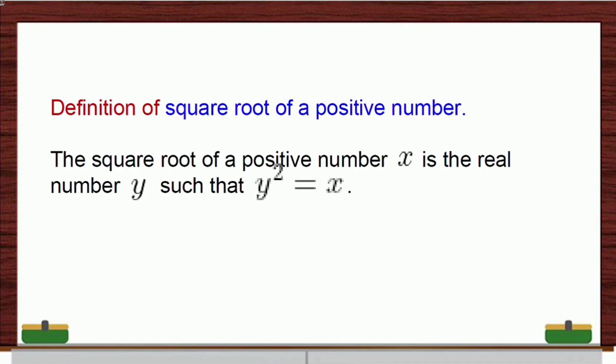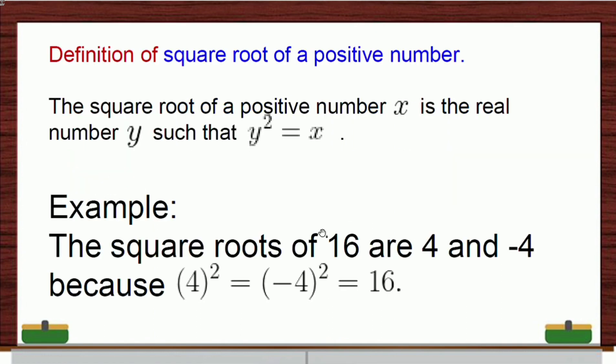The square root of a positive number x is the real number y such that y squared is equal to x. So, we're getting the square root of a positive number, and the answer must be a real number that, when you multiply it to itself, will give you that positive number x. So, for example, the square roots of 16 are 4 and negative 4. Why? Because it satisfies the definition.